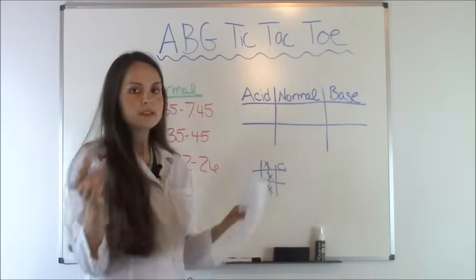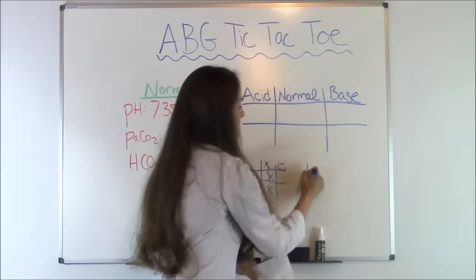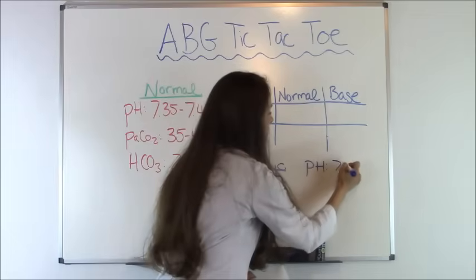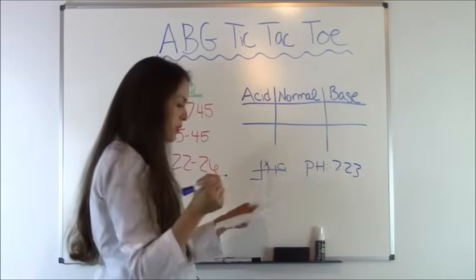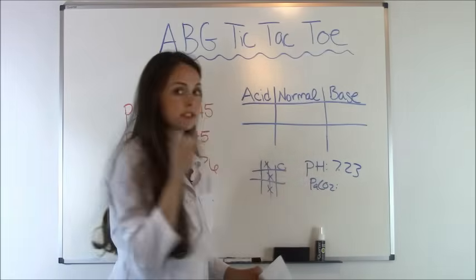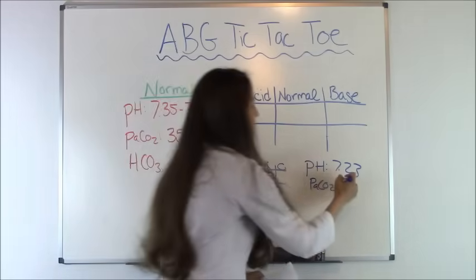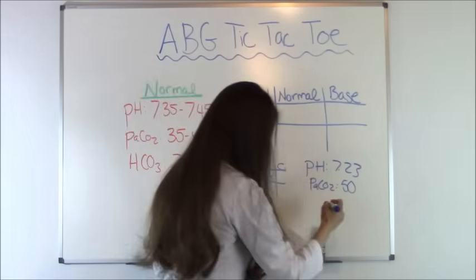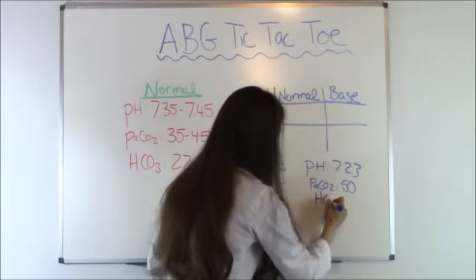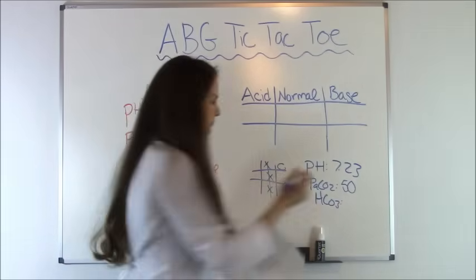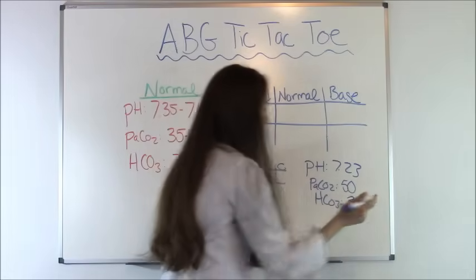In this problem, the patient's pH is 7.23. Their PaCO2, which represents respiratory, is 50. And their HCO3 is 30. Remember, HCO3 represents metabolic.